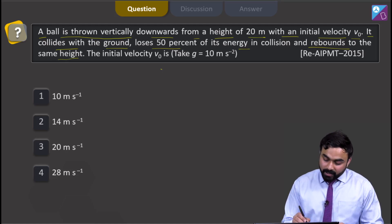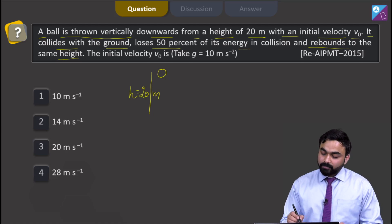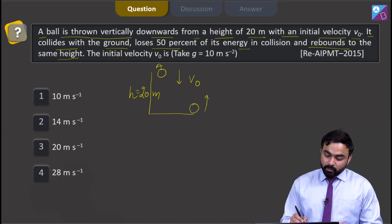So what is happening? There is this ball which is thrown from a height of 20 meter with an initial velocity of v0. It collides with the ground and then rises again and rises to the same height.